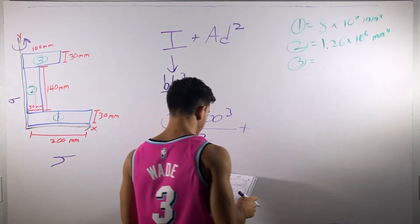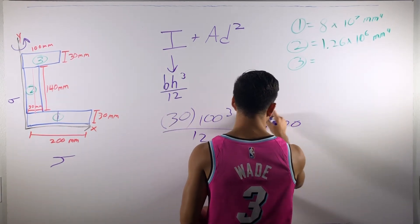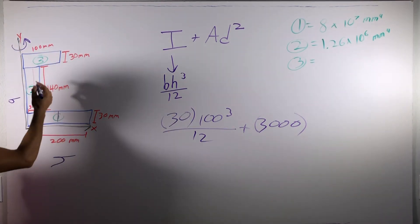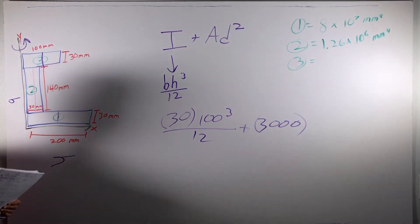Now, the area is just base times height. So, that's going to give us 3000. And the D is the distance between our centroid or whatever we're rotating about. In this case, it's half the height and the height is this way.